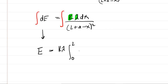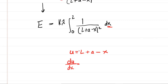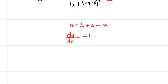That leaves us with the integral of one over (L plus A minus X) squared, with DX. To integrate this, we do a U substitution. Let U equal the quantity L plus A minus X. L and A are constants, so when you take the derivative DU/DX, they both go to zero. The derivative of minus X is just negative one. Multiplying both sides by DX, we get DU equals negative DX, so negative DU equals DX.